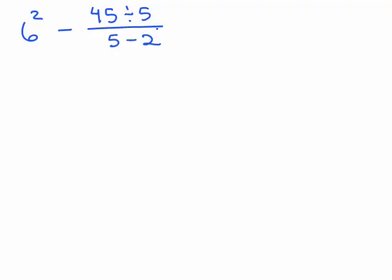Again, when you have a fraction, you're going to have to simplify the numerator and the denominator separately. Now, if you want, since this is being subtracted from 6 squared, you can do the 6 squared on the first step because that's separated by the minus sign. Remember, the last thing you're going to do is subtract. So, this is 36 minus,